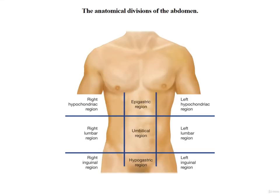The abdominopelvic cavity is a large portion of the body. To identify specific areas more easily, this cavity can be divided into regions using two different methods. The first method is the anatomical division, which is like drawing a tic-tac-toe board on a patient's abdomen, breaking it into three rows with three squares each. In the upper row, the right and left regions are the right and left hypochondriac regions, and the middle region is the epigastric region. Epigastric means pertaining to above the stomach, and hypochondriac means pertaining to below the cartilage.